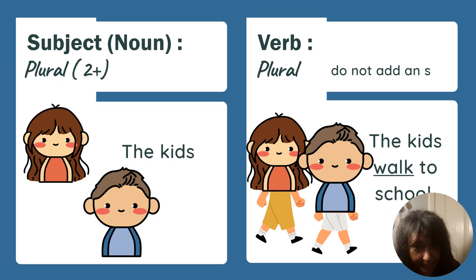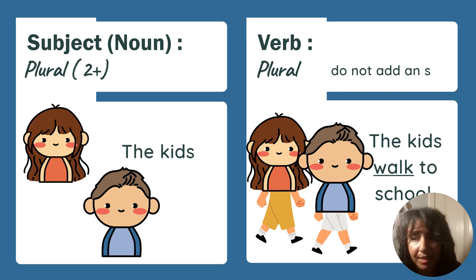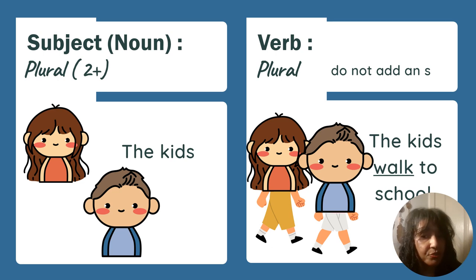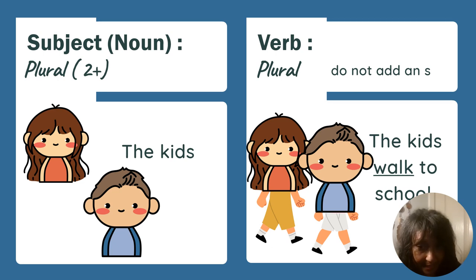Here's another example: kids. How many kids are we talking about? More than one — we call that plural. When we have more than one noun or subject, when we talk about what the subject is doing and it has more than one — what we call plural — we do not put an S or an ES at the end of the verb. So here's an example: 'The kids walk to school.'